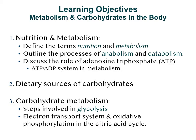Our initial learning objectives will be looking at the processes of nutrition and metabolism, in which we will define the terms nutrition and metabolism, and then outline the processes of anabolism and catabolism. Then we will discuss the role of ATP and ATP-ADP cycling and how this is coupled to drive some of the reactions in our body. We will then look at the dietary sources of carbohydrates, with a particular focus on carbohydrate metabolism — specifically the steps involved in glycolysis, the tricarboxylic acid cycle, and the electron transport chain. This is a difficult area, but we'll simplify it. Everything is take-home now, so just try to gain a good understanding.